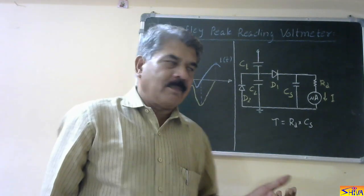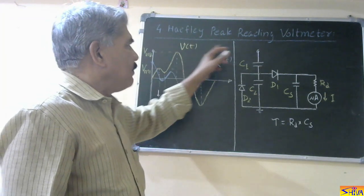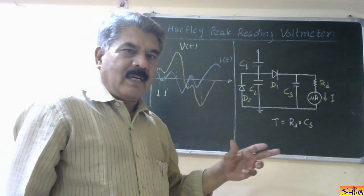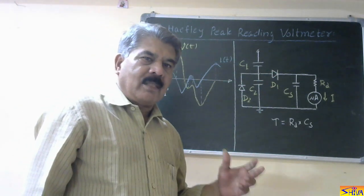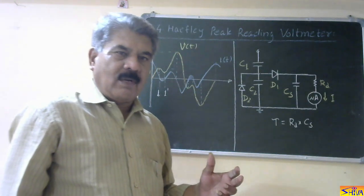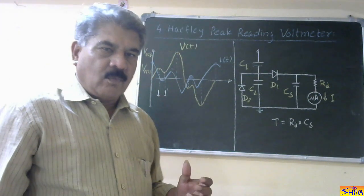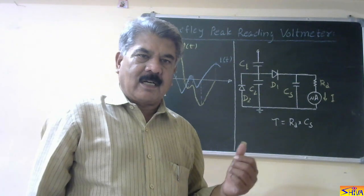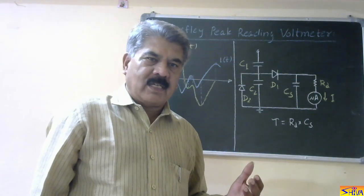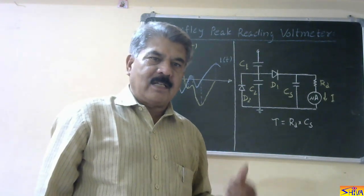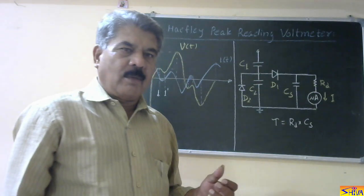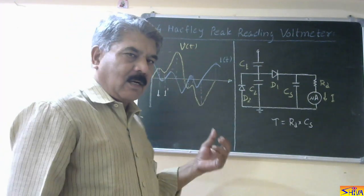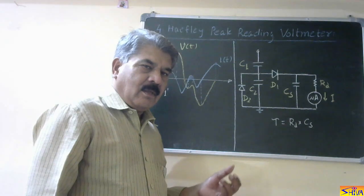Therefore, we go for another method — that is called the Halfley peak reading voltmeter method, or the Halfley method of measuring the peak value of voltage. This type of waveform with multiple maxima exists when there is pre-discharge current, meaning current flows before the actual discharge. That is called pre-discharge current. During the flow of pre-discharge current, more than one maxima are observed in the waveform.